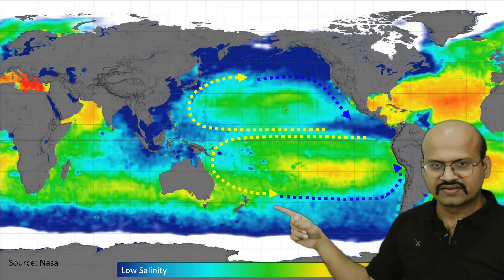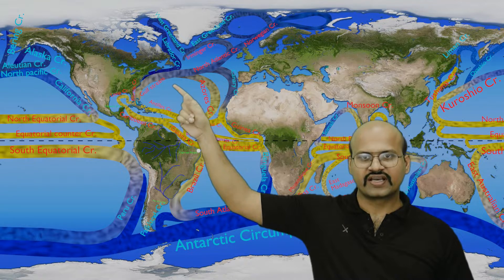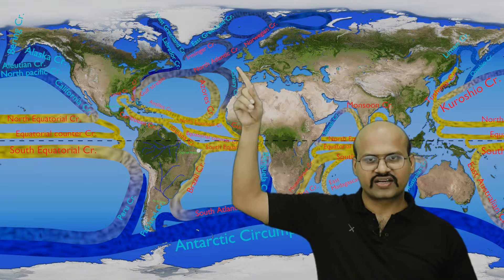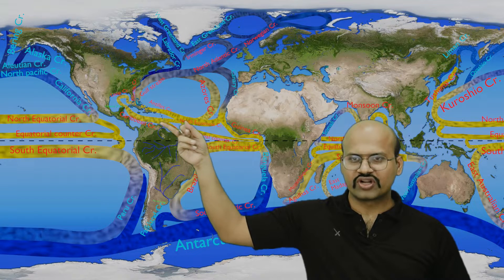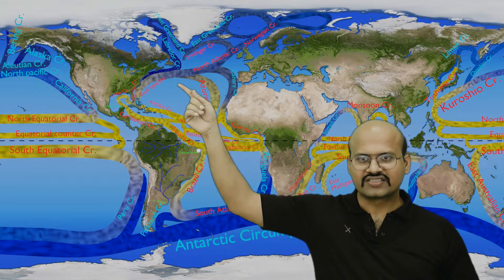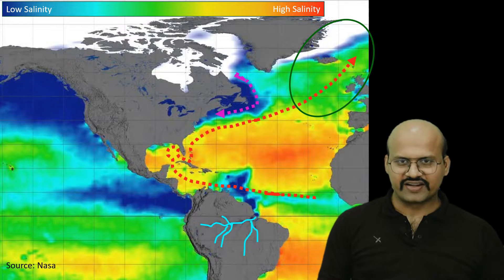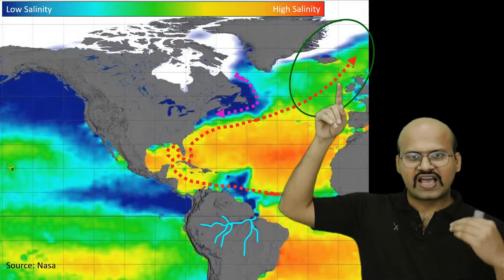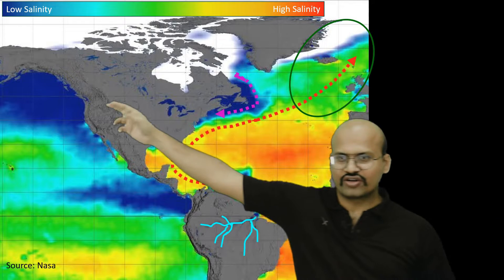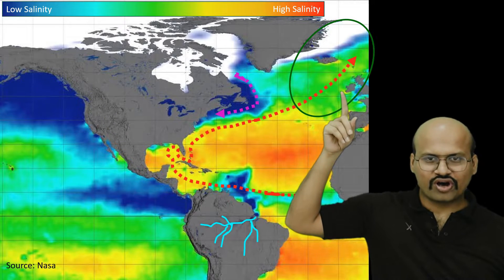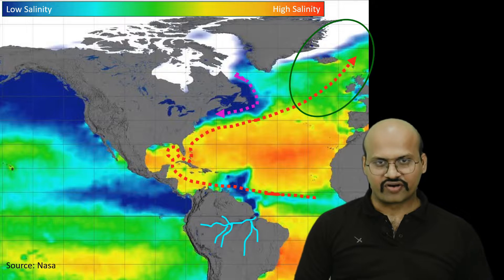In the Atlantic Ocean, the Gulf Stream takes high-saline water from the equatorial region towards the temperate region, and the North Atlantic Current (North Atlantic Drift) carries this saline water further into the polar regions. Therefore, even though Iceland and England are at very high latitudes, the salinity of the oceans there is higher than corresponding regions on the other side, because of the North Atlantic Drift.